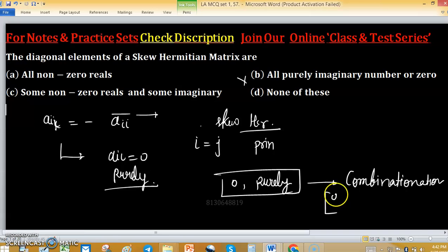For example, I can take a matrix with 0, iota, minus one, one. This is a skew Hermitian matrix.